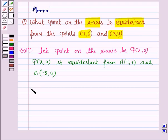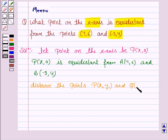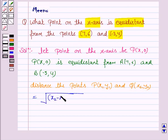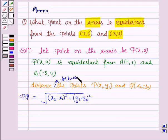The distance between the points P(x1, y1) and Q(x2, y2) is given by the formula: the square root of (x2 - x1) whole square plus (y2 - y1) whole square. So this is the distance between the points P and Q. You must remember this formula.